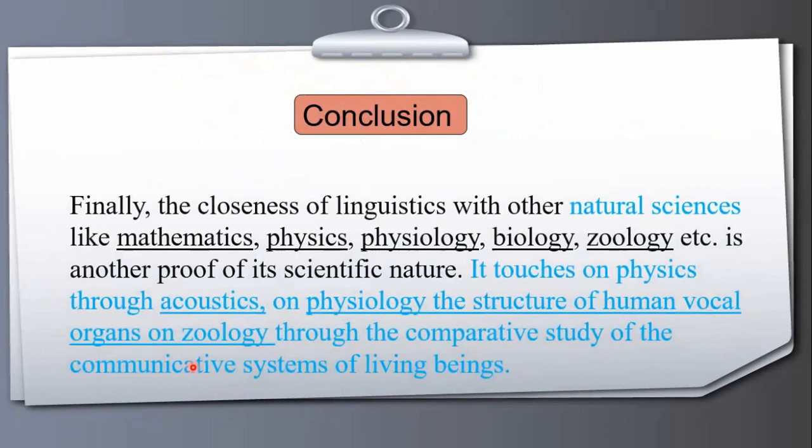Let's read the conclusions. What are the conclusions and what we have concluded from our today's lecture are the things we have rendered here today. Finally, the closeness of linguistics with other natural sciences: linguistics is related to other natural sciences like mathematics, physics, physiology, biology, zoology. All these branches of sciences are related to linguistics.